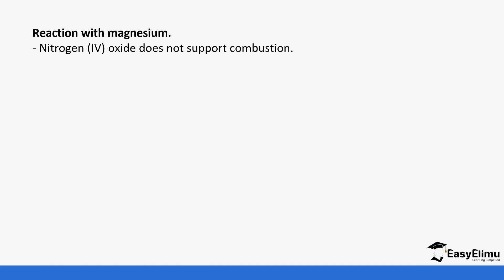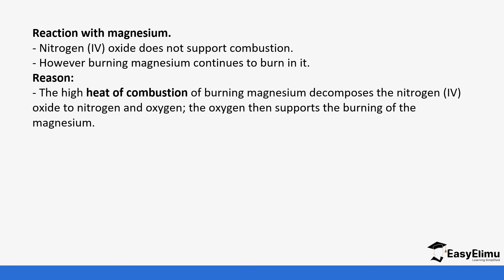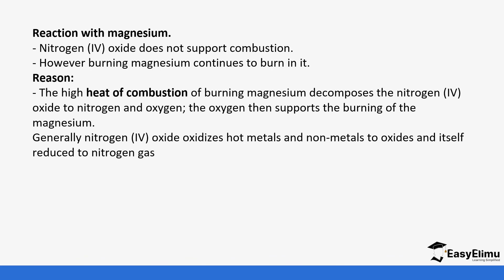One of the chemical properties is that nitrogen 4 oxide can react with magnesium. Like nitrogen 2 oxide and nitrogen 1 oxide, nitrogen 4 oxide does not support combustion, but burning magnesium continues to burn in it. This is because the high heat of combustion of burning magnesium decomposes nitrogen 4 oxide to nitrogen and oxygen, and the oxygen supports the continued burning of the magnesium.